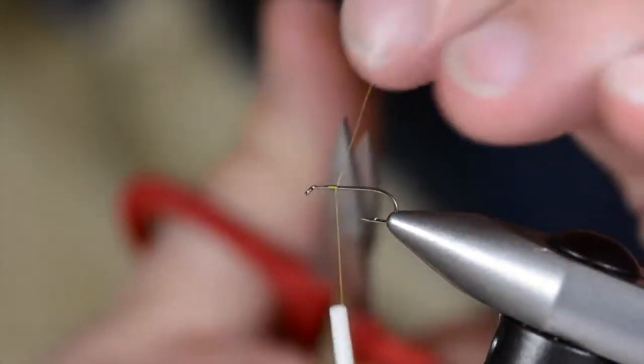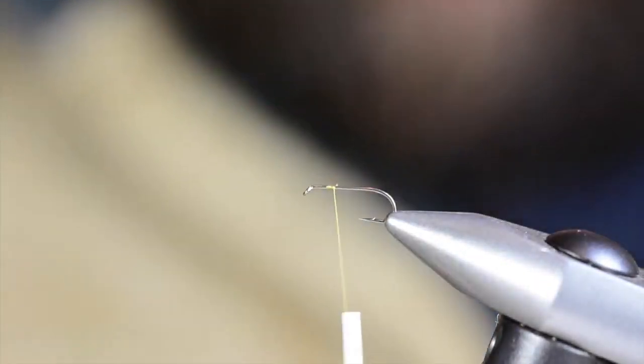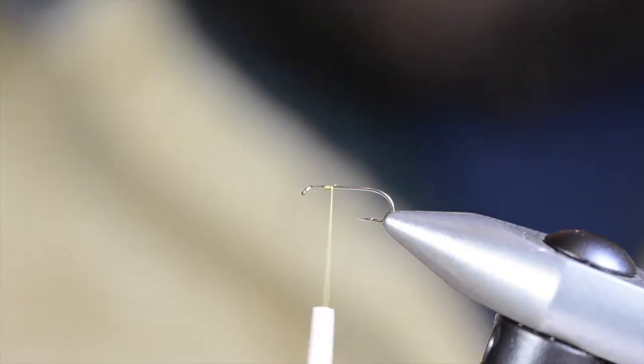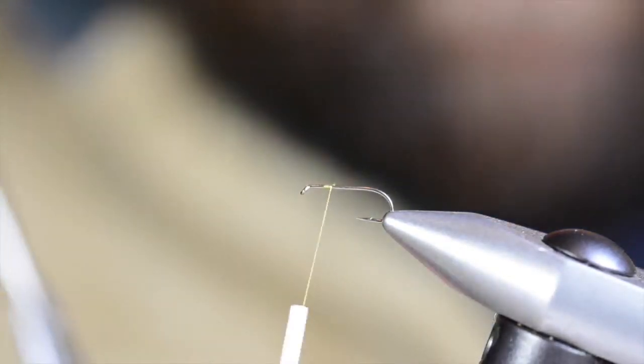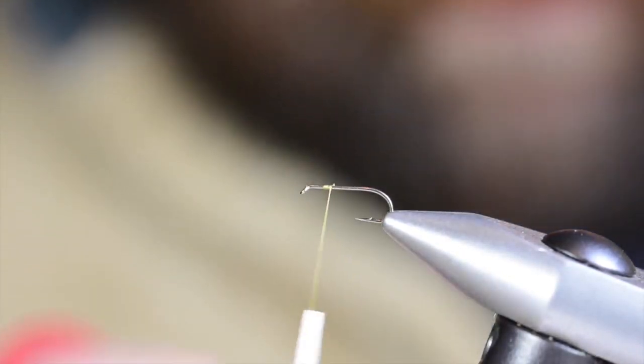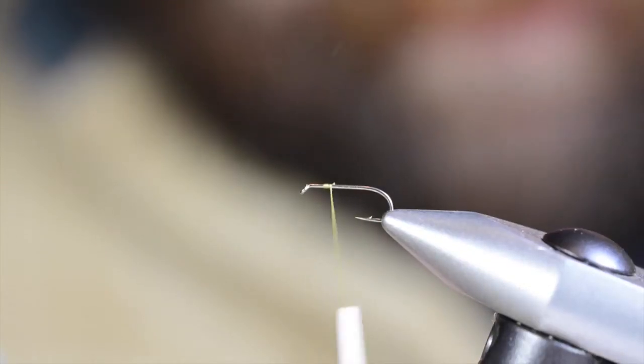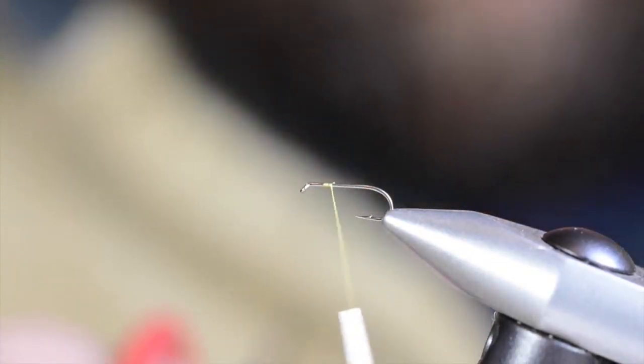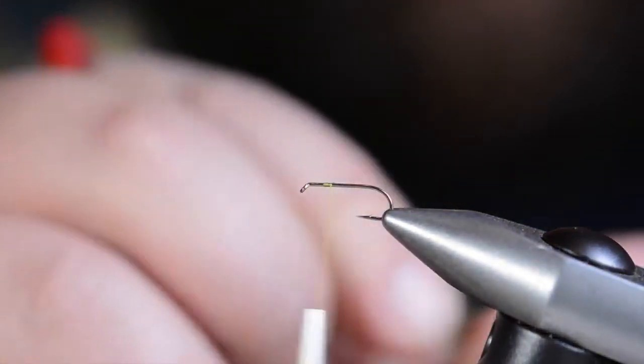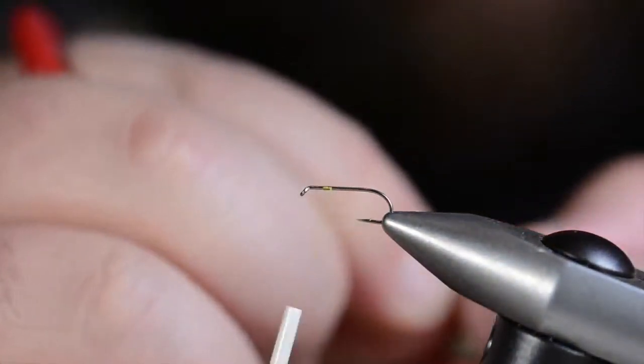Okay, throw the thread on the hook here. I'm going to select four micro fibers for Vince, and I want these about the same length as the hook shank.